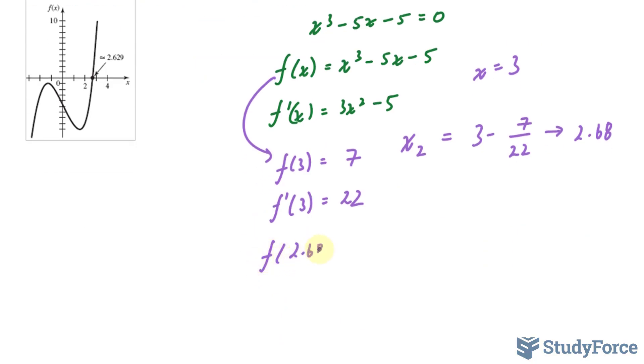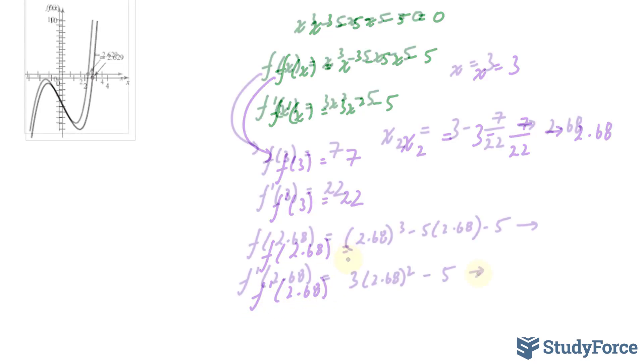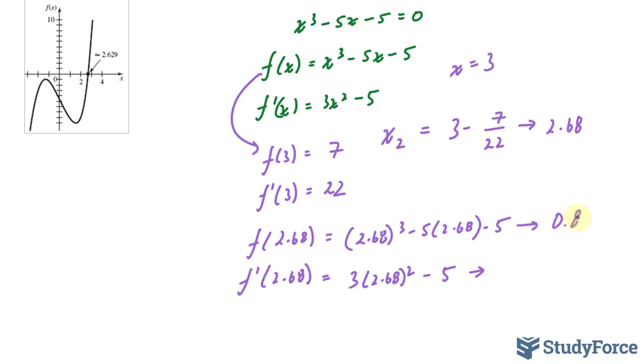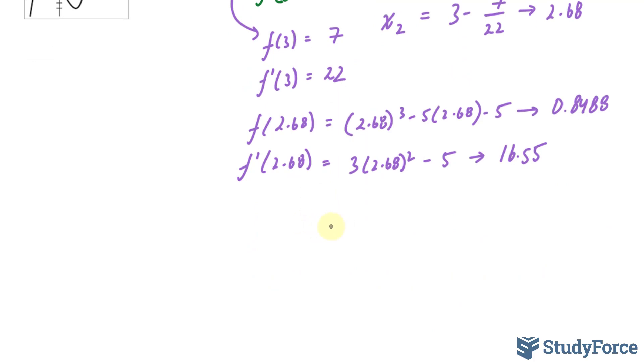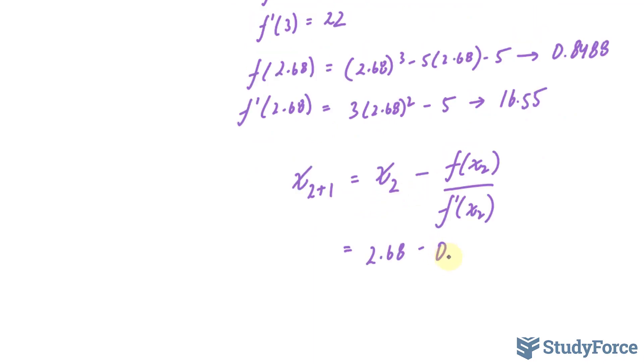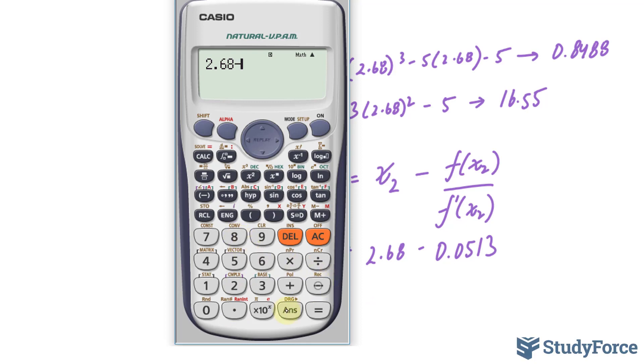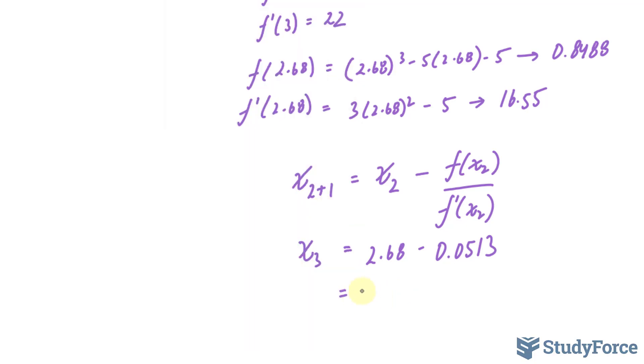f(2.68) and f'(2.68). This should give us 0.8488, and this should give us 16.55. Once again, I'll take this number and divide it by this number: 0.8488 divided by 16.55, which gives us 0.05128. So I'm going to take that same equation as before. x₂+1 equals x₂ minus 2.68 minus 0.0513, and this gives us 2.628.